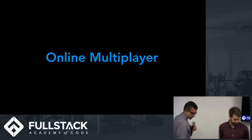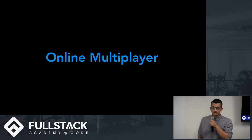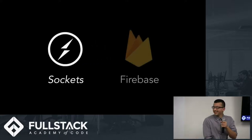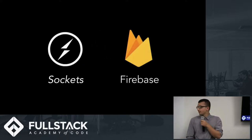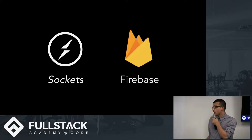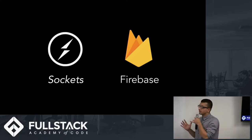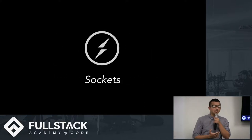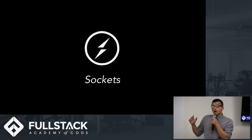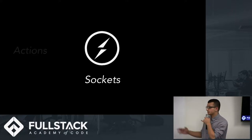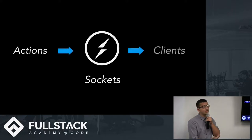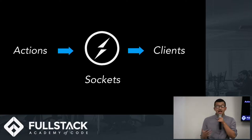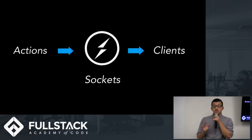Creating the online multiplayer feature presented many challenges. One of the first was deciding which event library to use — Socket.io, a bi-directional event-driven library, or Firebase, a real-time database hosted on the cloud. After some discussion, we decided to use Socket.io because we were already really proficient in it, and emitting actions and events — which a lot of our piece movement depended on — felt a little bit simpler.